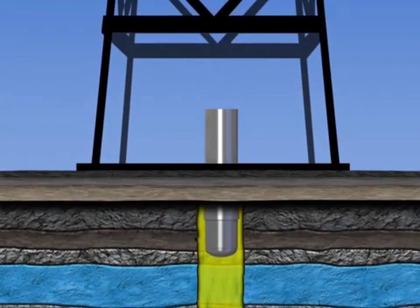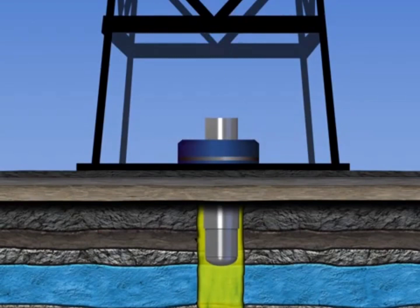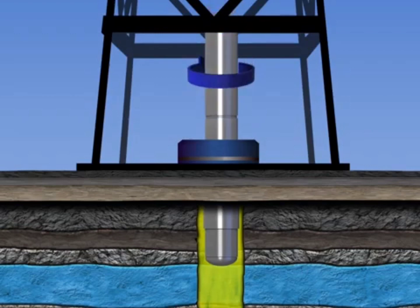The casing string is made of numerous joints of the same size, screwed together at the collar. The casing pipe is selected according to its outer diameter, its wall thickness, its length, its weight by unit length, and the grade of steel it is made of.